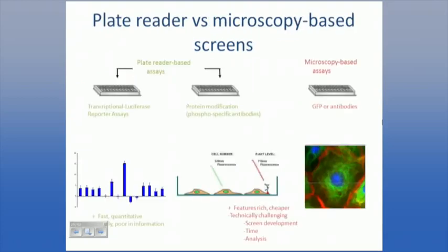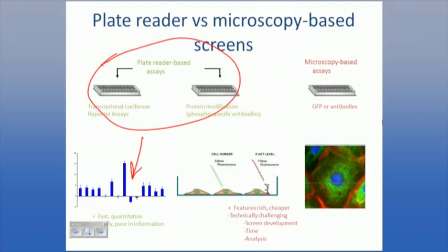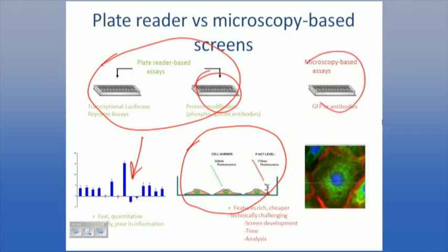Here's a slide depicting the different types of assays. Plate reader-based assays in the upper left - things like luciferase or LACSI assays - are fast and quantitative but relatively poor in information content. There are also plate screens looking at cell number and phosphorylation. And there are microscopy-based screens where you can look at a myriad of phenotypes - here a three-color stain of cells looking at nucleus, cellular internal machinery, and cell membranes. You can do a lot with microscopy-based screens; however, they tend to be more difficult for assay development, take a lot of time to read, and the data analysis is not trivial.